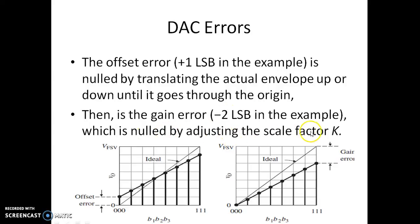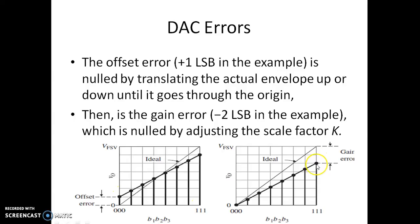The gain error of minus 2 LSB can be nulled by adjusting the scale factor k, which is the gain of the circuit. So we define two static DAC errors: offset error (+1 LSB in this example) and gain error (-2 LSB after nullifying offset). The offset error is removed first, then the gain error is corrected by adjusting the scale factor.